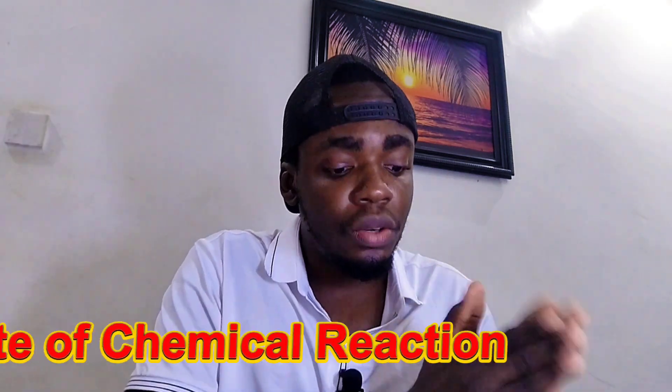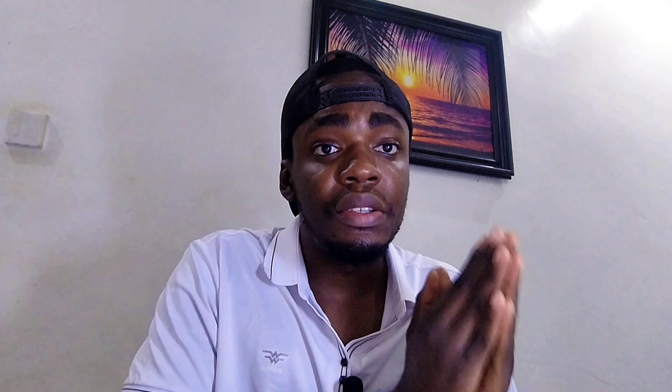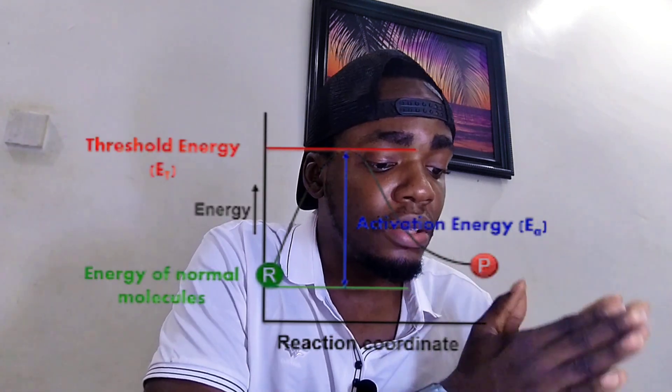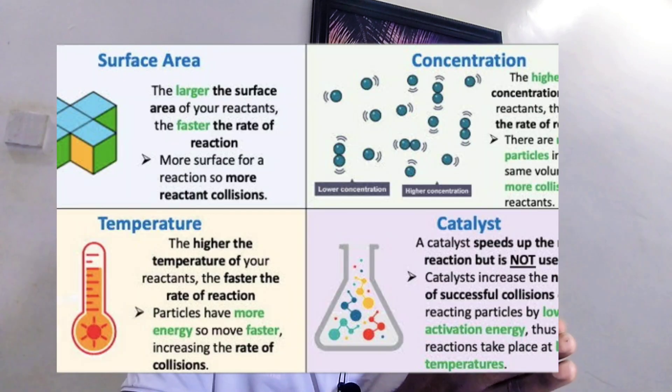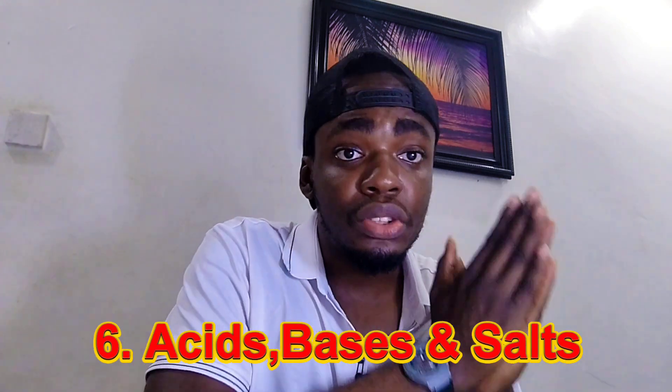Number five is rates of chemical reactions. Under this topic we cover factors affecting rate of chemical reactions — such as temperature, surface area, concentration, and catalyst — and also activation energy. Number six is acids, bases, and salts. Key areas here include pH, neutralization reactions, preparation of salts, and acid-base indicators.